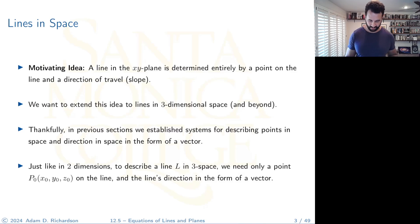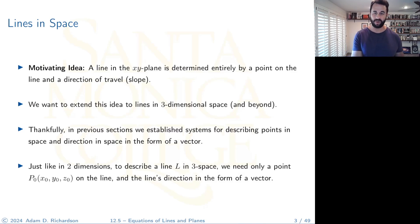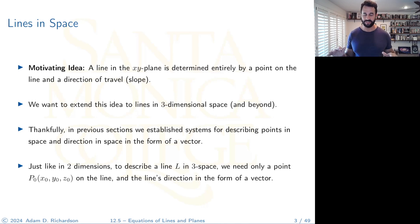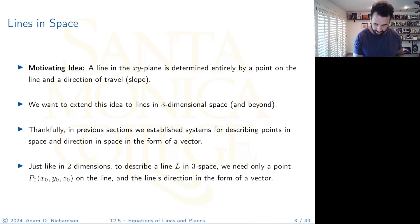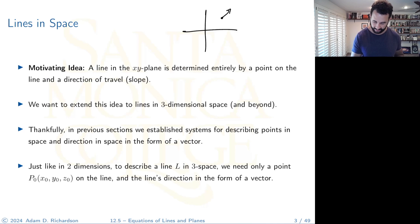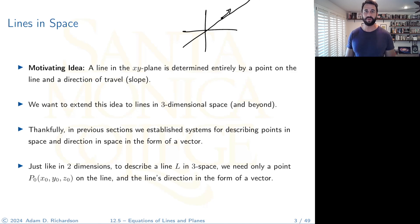Here is the motivating idea. If you've got a line in the XY plane, it's entirely determined by a point on the line and a direction of travel, which we call the slope. In R2, you have a point somewhere and a direction, and that completely determines a line.